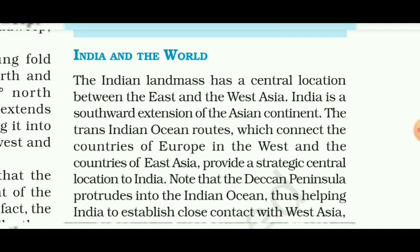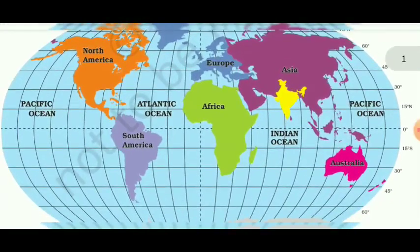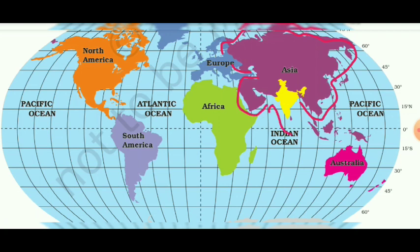To understand this topic, let us move towards the world map. Here you can see the area in purple color is the Asia continent. India is denoted in yellow color, situated in the southern part of Asia at the head of the Indian Ocean. According to this figure, we can clearly say that India is situated in the southern part of Asia and also has a central location.